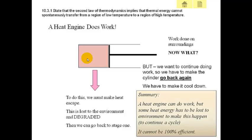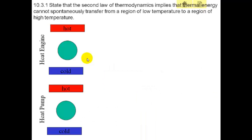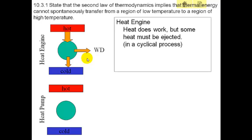In summary: a heat engine can do work, but some heat energy has to be lost to the environment to keep the process going. A heat engine cannot be 100% efficient — we have to throw heat out at some stage of the cycle. In the schematic diagram: we heat it up, do work, but to keep the cycle going continuously we must withdraw heat at some stage, sending it to the cold reservoir where this energy is degraded. So: thermal energy transferred from the hot reservoir equals the thermal energy transferred to the cold reservoir plus the work done.